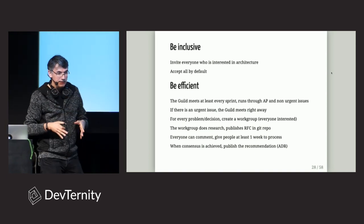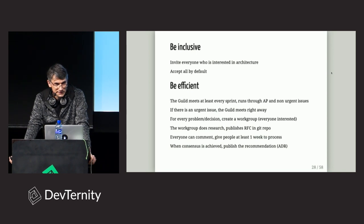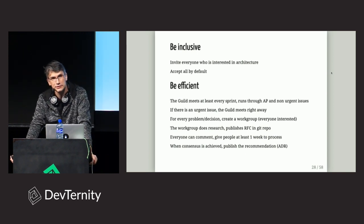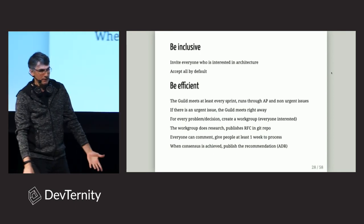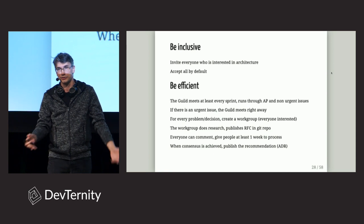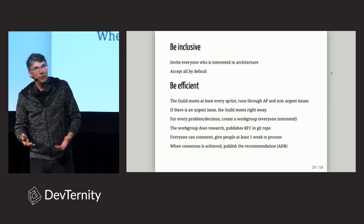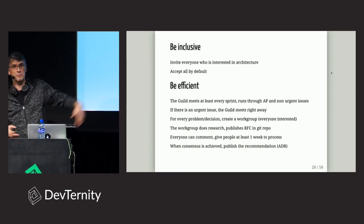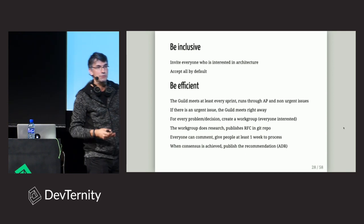Now let's talk about how the guild works, because we need to be efficient and actually deliver something. We have a meeting once every sprint to run through all action points and urgent things. If something is really urgent, the speaker of the guild calls an extra meeting right away. For every problem or architectural decision, we create a separate work group — just a small bunch of people, two to four maximum — to work on an issue and propose a solution. The solution and research is then published to the Git repository as a Request for Comment document.